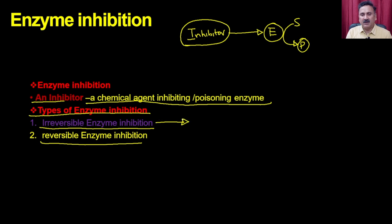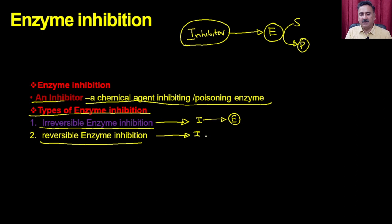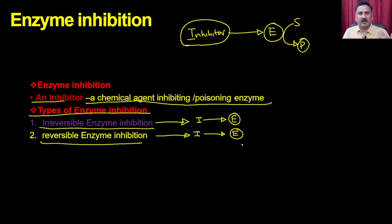Irreversible inhibition means permanent inhibition — once you add the inhibitor, it blocks the enzyme permanently. In the case of reversible inhibition, the inhibitor inhibits the enzyme, but if you perform some treatment or method, the inhibition can be reduced or relieved.